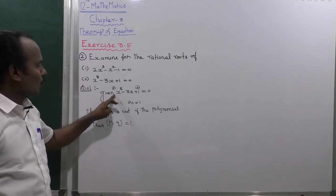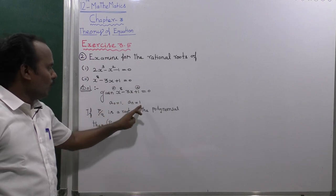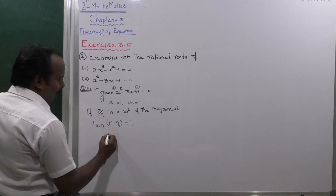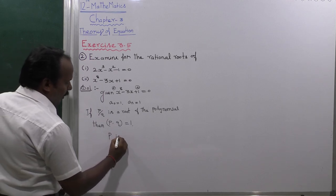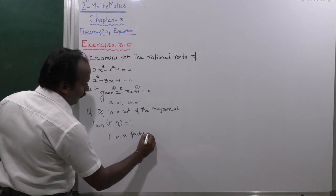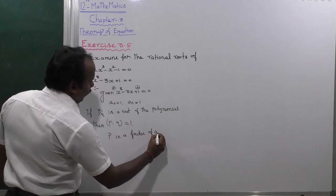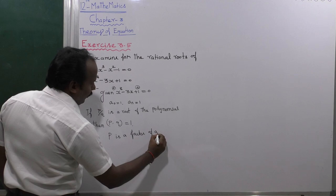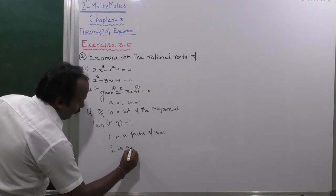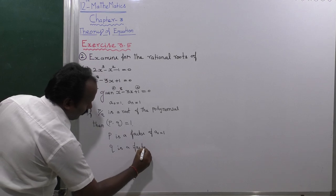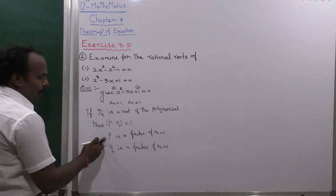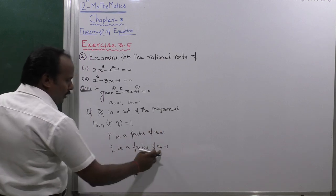Because the first number coefficient and the constant should be 1. So 1 is equal to 1. The first condition: p is a factor of a naught, and a naught is equal to 1. Next, q is a factor of a_n, and a_n is equal to 1. So the p factor is also 1, and the q factor is also 1.